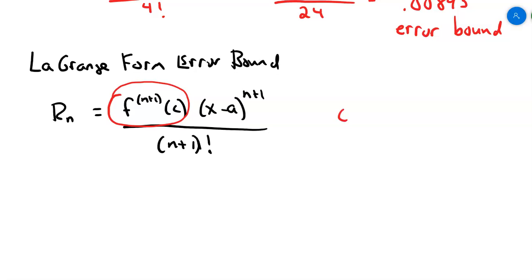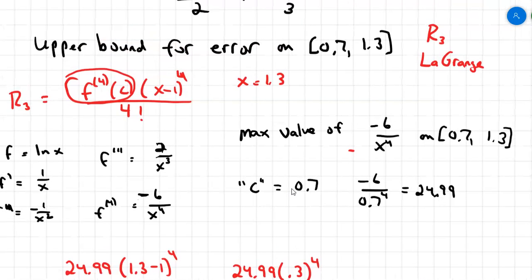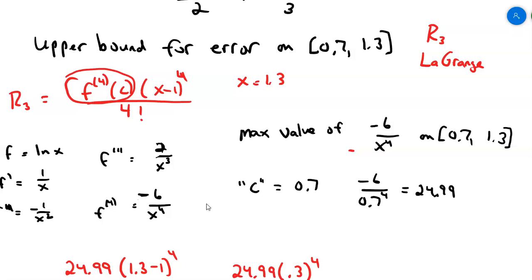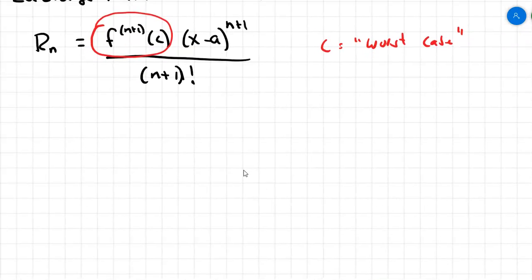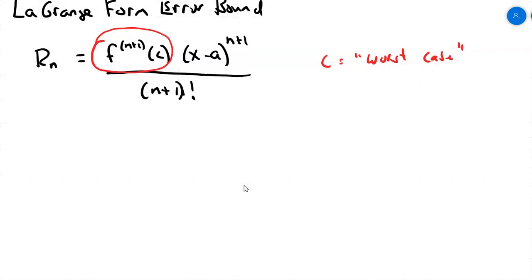We're trying to look for c to be what we called the worst case. When we did that example — the last example of the last video, which dealt with the natural log — we came up with negative six over x to the fourth. Rather than saying should I plug in 0.7 or 1.3, I tried to phrase it in terms of finding the maximum value of that n plus first derivative. So we're going to think along those lines and ask: could I rewrite this Lagrange form of the error bound a little bit differently? It turns out that c really doesn't matter. The actual value of c is not terribly relevant.